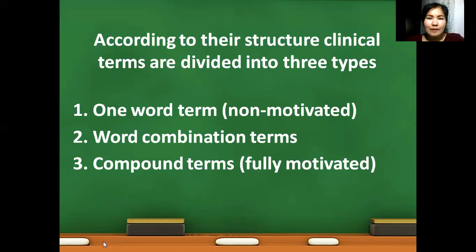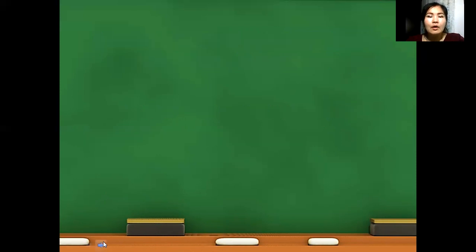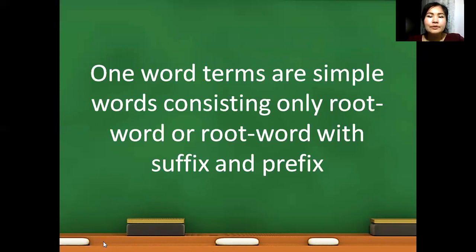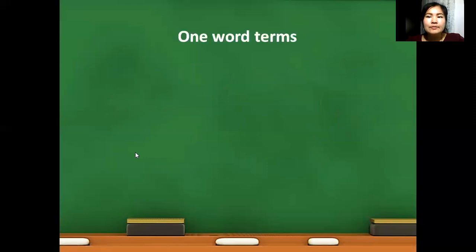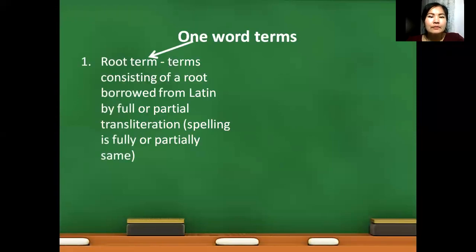Let's discuss each type separately in detail. One word terms are simple words consisting of a root word or root word with suffix and prefix. According to this, one word terms are divided into two types. First is root term, terms consisting of a root borrowed from Latin into English by full or partial transliteration. Transliteration means keeping the spelling ultimately the same or spelling a little bit changed. Look at the examples.